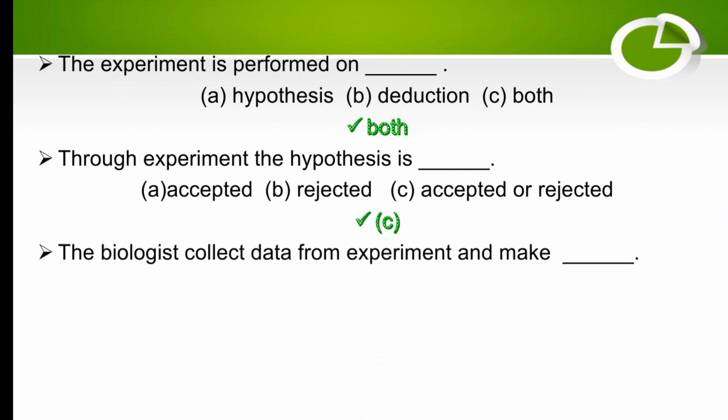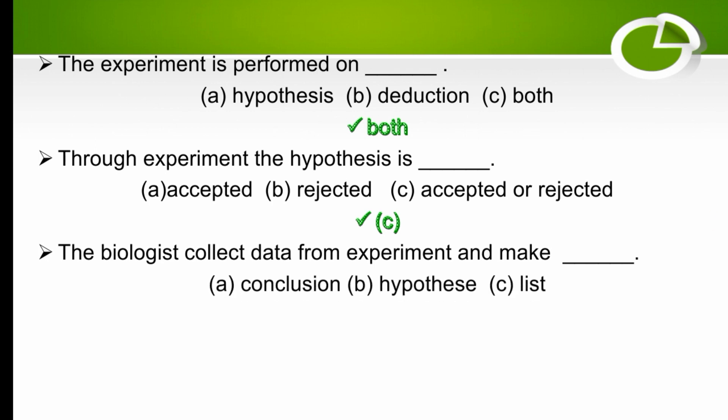The biologist collects data from the experiment and makes what? The options are a conclusion, hypothesis, or list. They make a conclusion from collecting the data, so the right option is A.